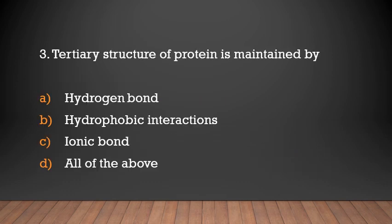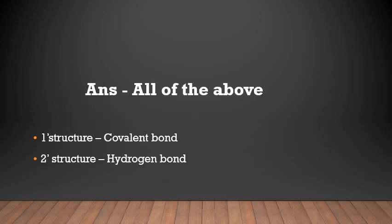Question: Tertiary structure of protein is maintained by — hydrogen bond, hydrophobic interactions, ionic bond, or all of the above? Answer: All of the above. The primary structure of protein is maintained by covalent bonds, and the secondary structure is maintained by hydrogen bonds.